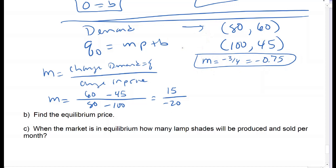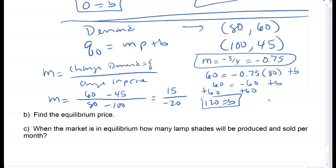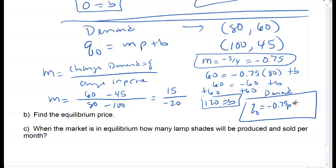Plug one of those points in to find my missing piece. I'll use the first one. Be careful: 60 goes with the quantity and 80 goes with the price. So 60 equals negative 0.75 times 80 plus B. That gives 60 equals negative 60 plus B, so B equals 120 is my y-intercept. My demand equation is: quantity demanded equals negative 0.75 times price plus 120.